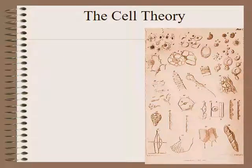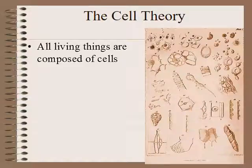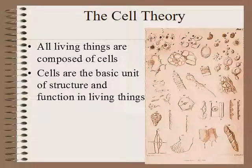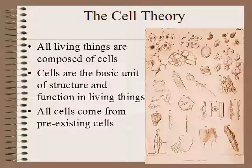This gives us the combined idea called cell theory, which has three main parts: first, all living things — be it plant, animal, bacteria, whatever — if it's alive, it's composed of cells. Second, cells are the basic unit of structure and function in living things. And third, all cells must come from pre-existing cells, no matter what kind of living thing it is.